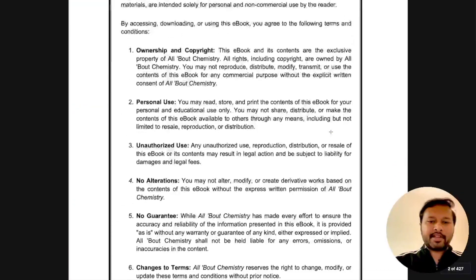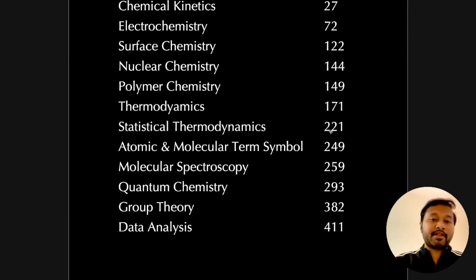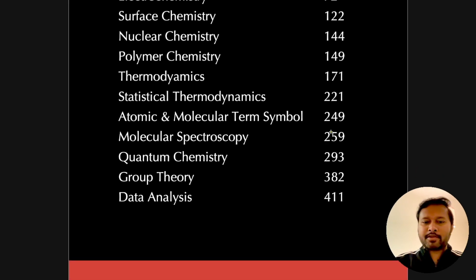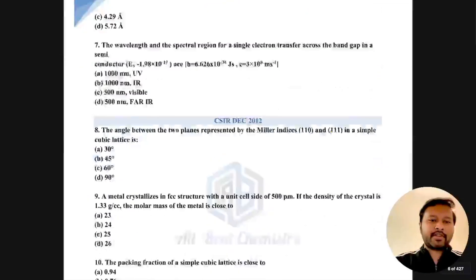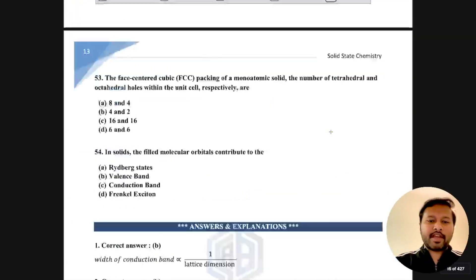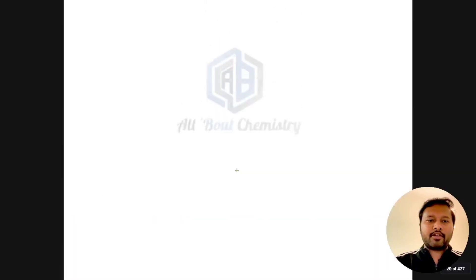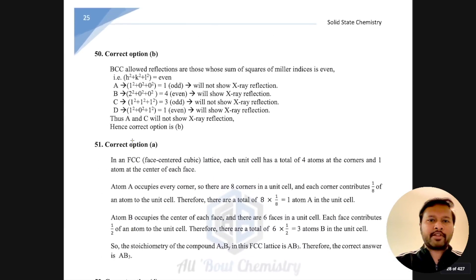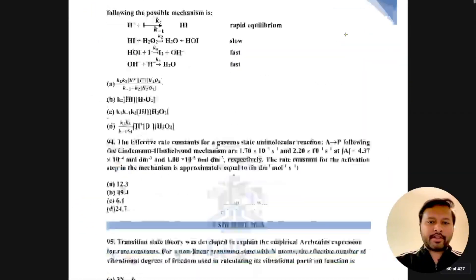The physical chemistry ebook has a similar front page and disclaimer. The contents include: solid state chemistry, kinetics, electrochemistry, surface chemistry, nuclear chemistry, polymer chemistry, thermodynamics, statistical thermodynamics, atomic and molecular structure, molecular spectroscopy, quantum chemistry, group theory, and data analysis. Questions for December 2023 are included, followed by detailed solutions, with the topic name always shown at the top.